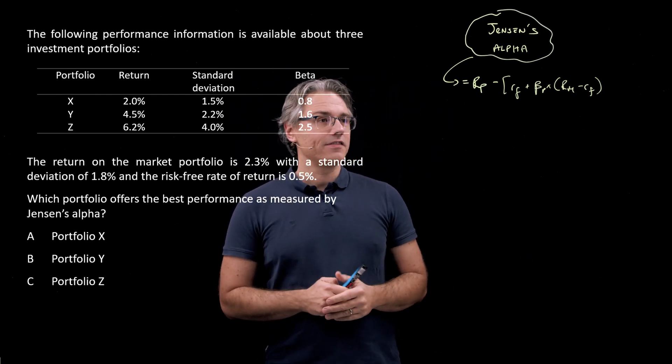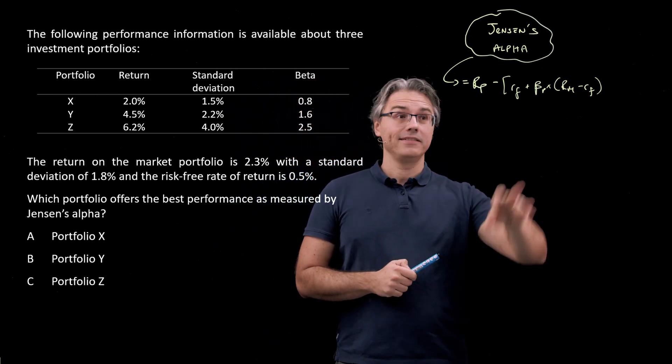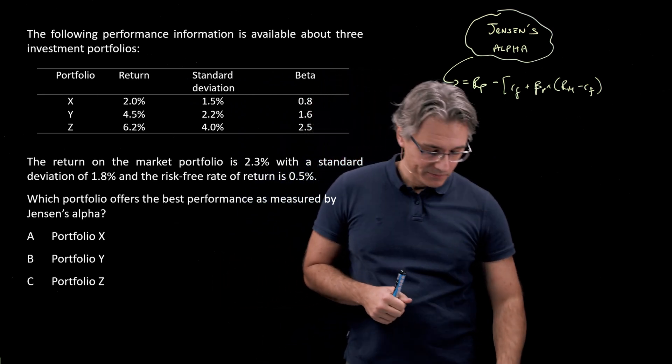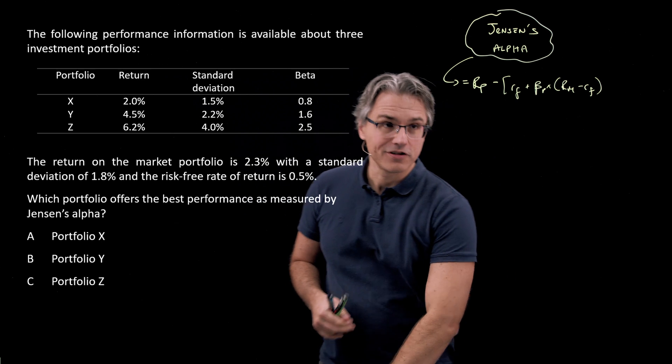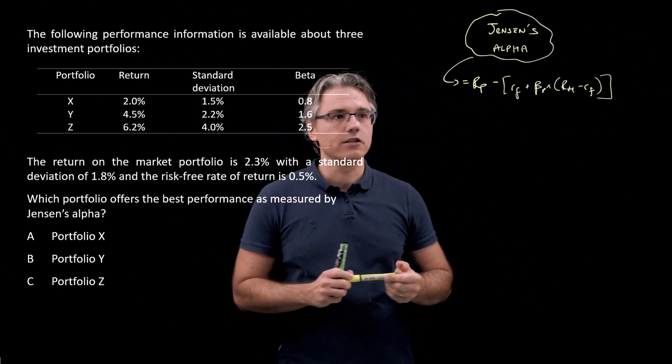And obviously, if this relationship is positive, if a portfolio is generating more than what's required under the CAPM model, let me perhaps just finish this off with a nice square bracket at the end to close this off and make the formula complete.